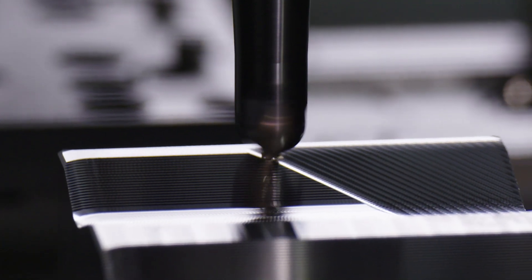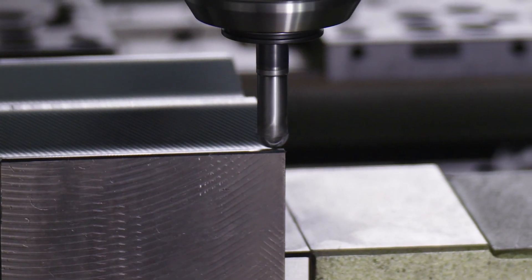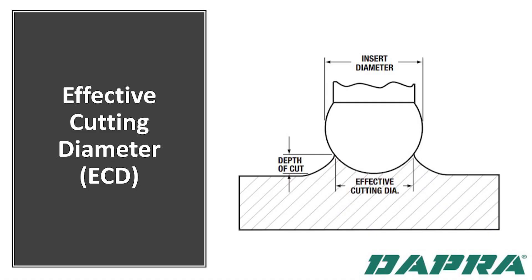Let's start with effective cutting diameter. When engaging a ball nose cutter in your workpiece material, you are rarely engaging the full diameter — you're most often working with a smaller, sometimes much smaller, portion of the cutting tool. We call this the effective cutting diameter. Looking at this diagram, you can see that the lighter the depth of cut, the smaller the effective cutting diameter will be. Because of this, we want to make sure that the RPM we're calculating for our CNC program is based on the ECD, not the actual outside diameter of the cutter.